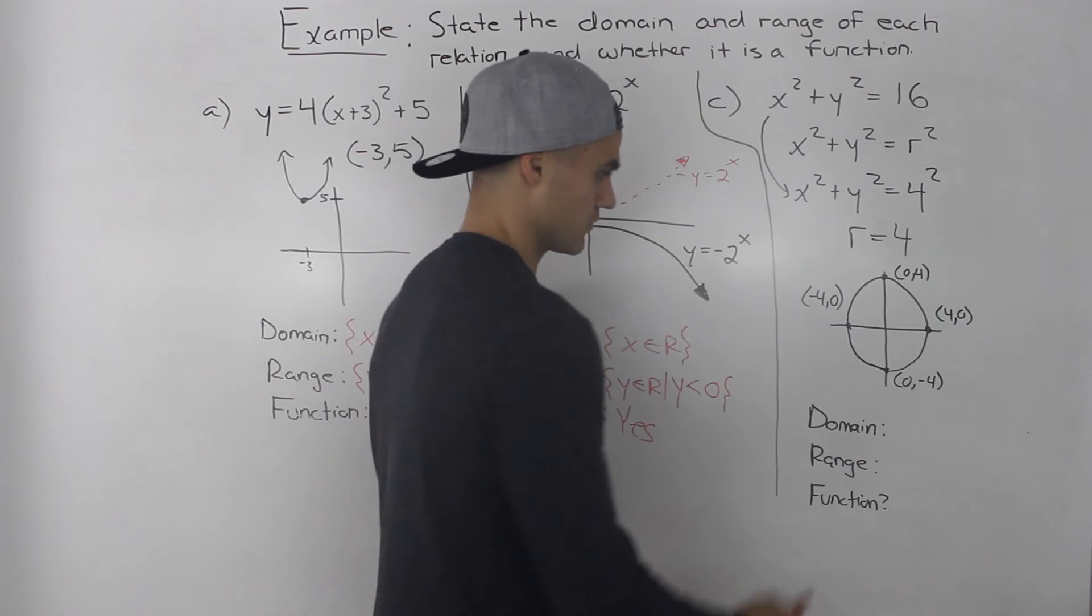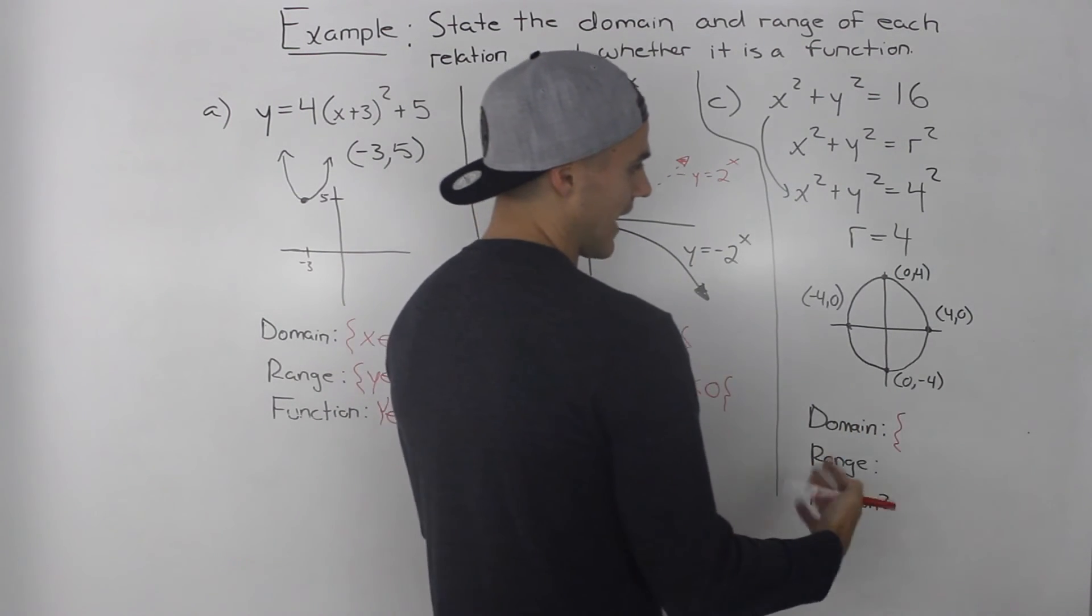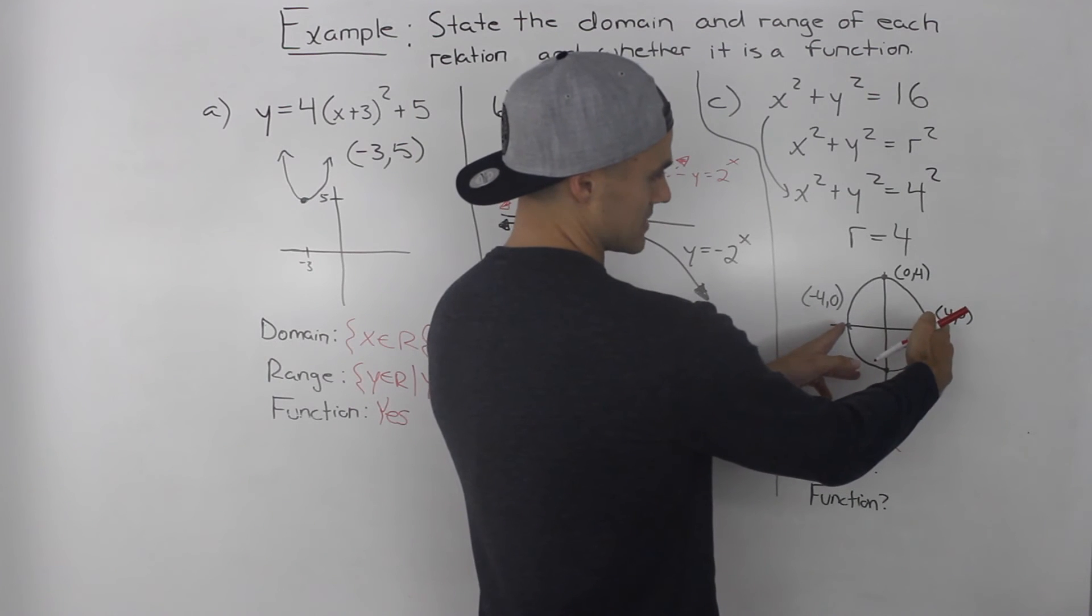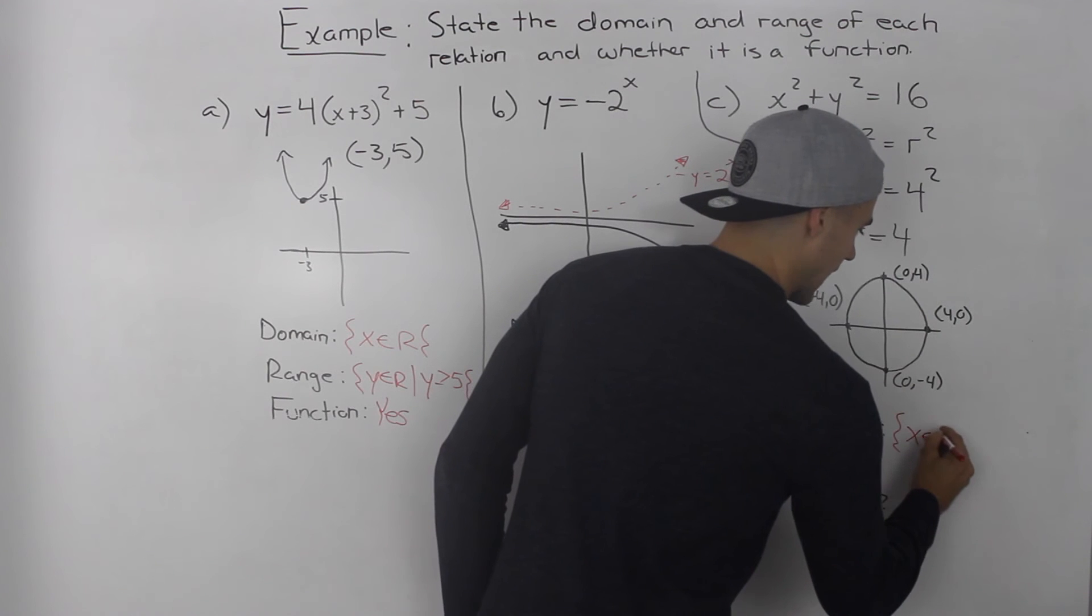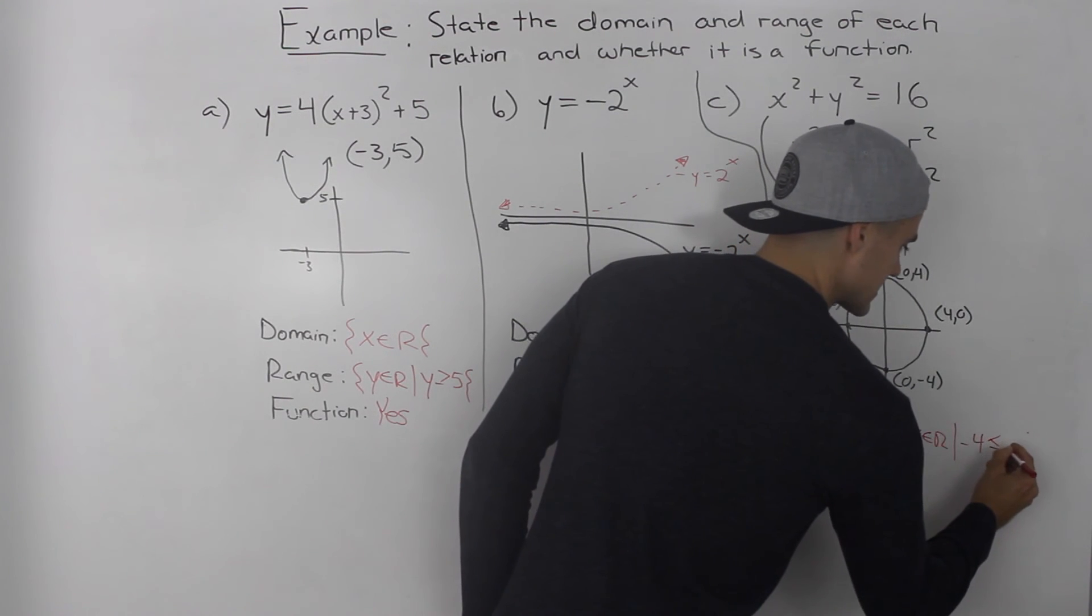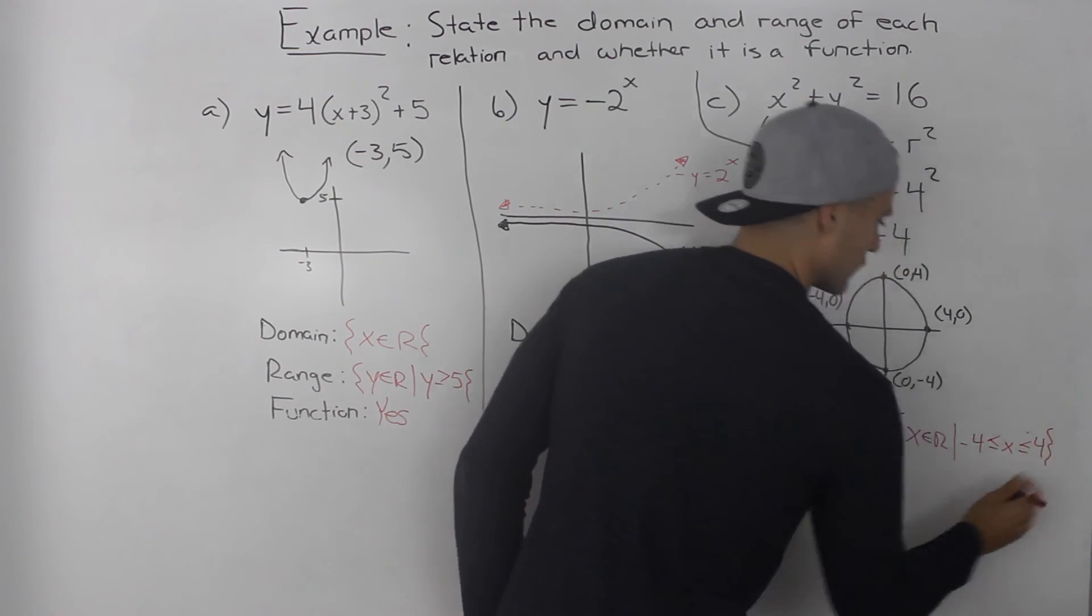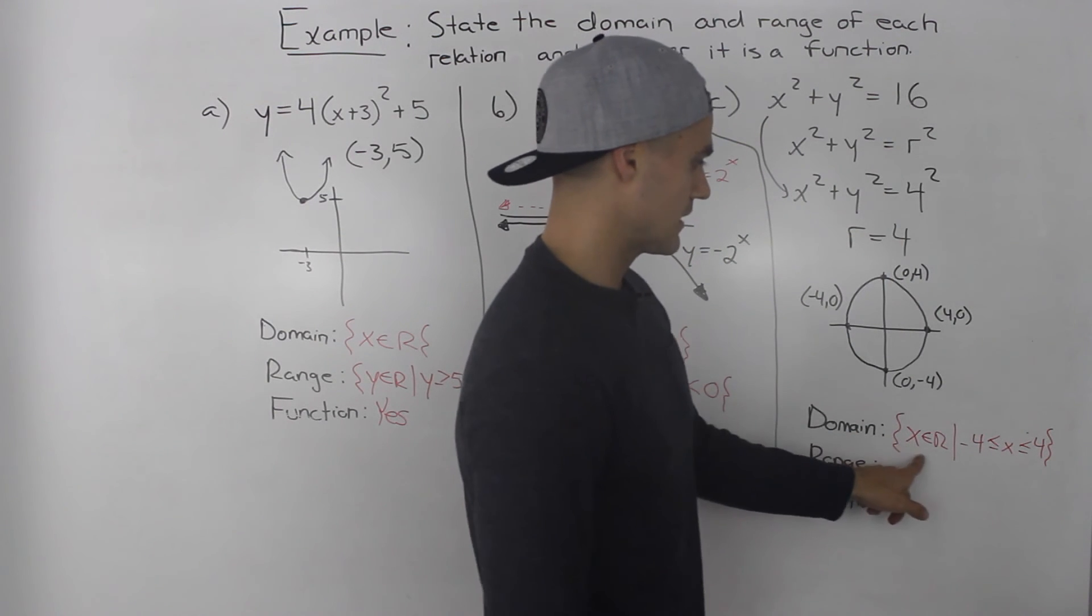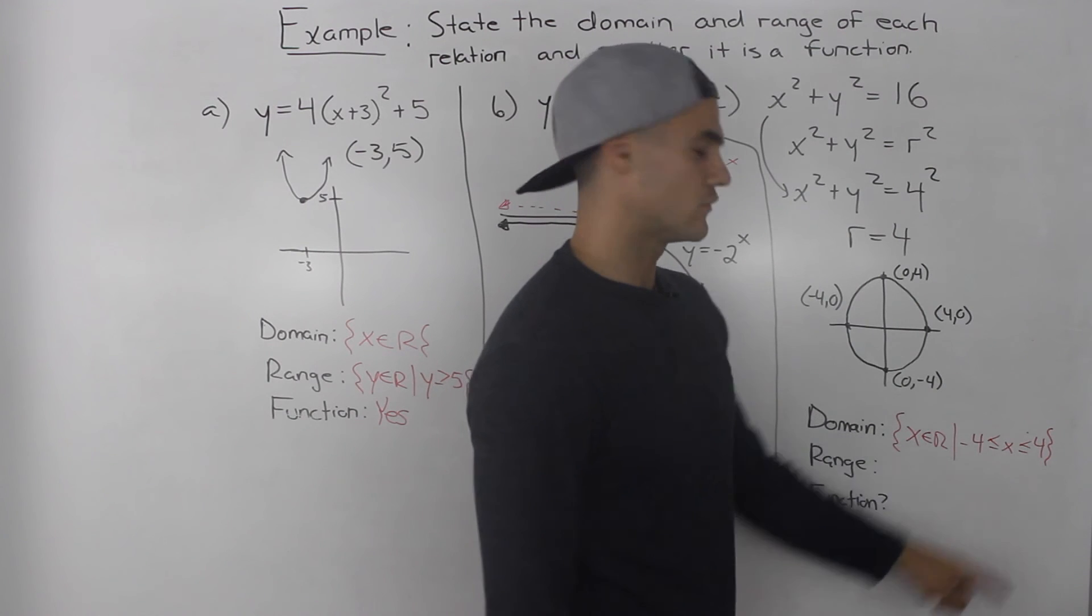So let's start off with the domain, the set of values that x can take. x can be anything as long as it's between negative 4 and 4. So the x value can be anything as long as x is greater than or equal to negative 4 and less than or equal to positive 4. So x can be anything as long as it's between or equal to negative 4 and 4.